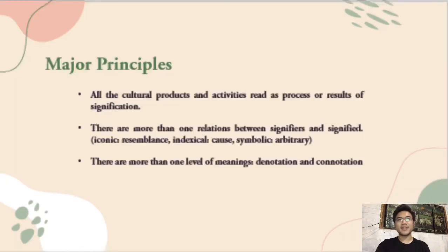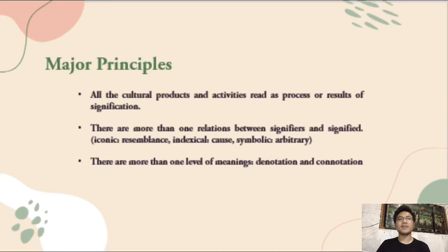Here are the major principles. All cultural products and activities are read as processes or results of signification. Next, there are more than one relation between signifiers and signified: iconic, through semblance; index, cause; and symbolic, arbitrary. And lastly, there are more than one level of meanings — there's denotation and connotation.